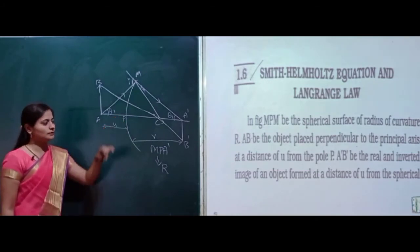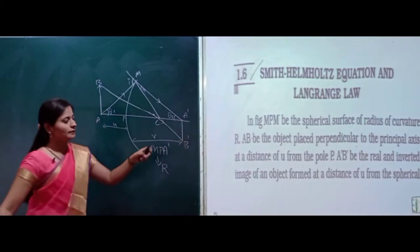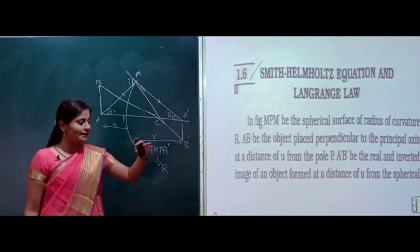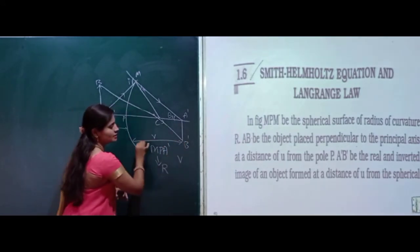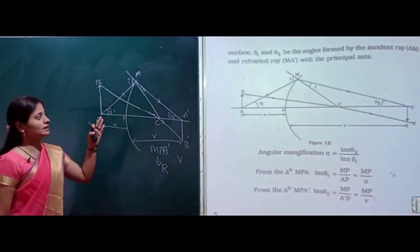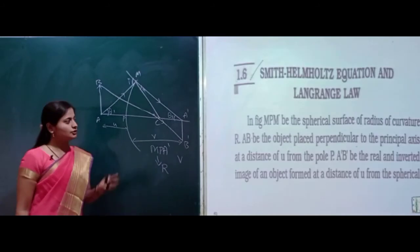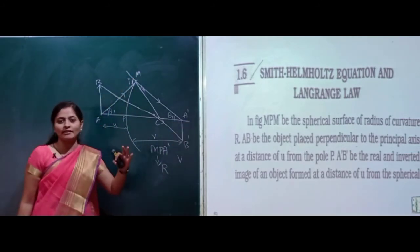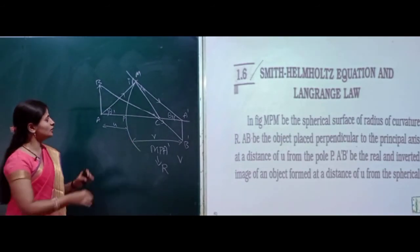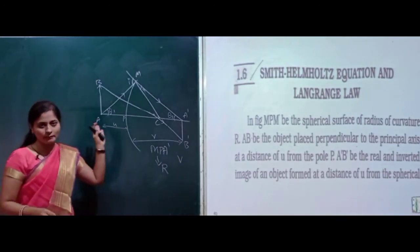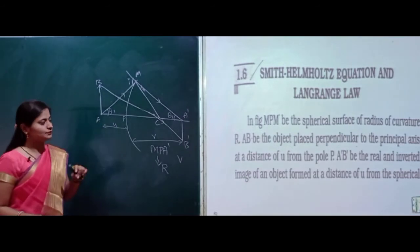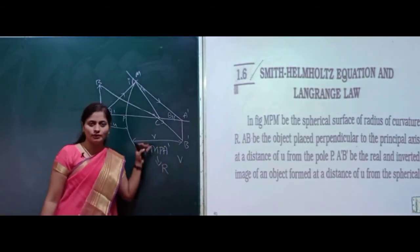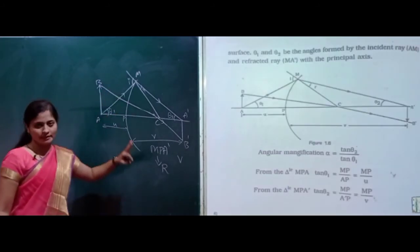Here P is nothing but the pole. A dash, B dash is the real and inverted image of the object formed at a distance of v from the spherical surface.